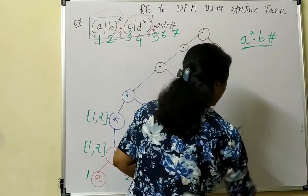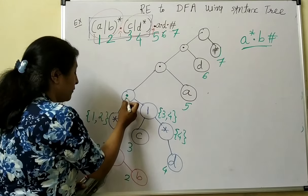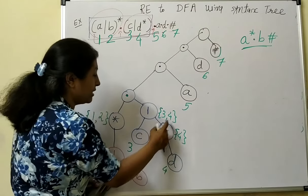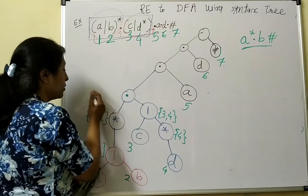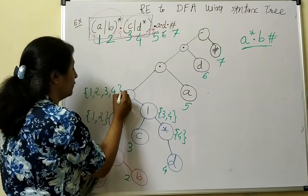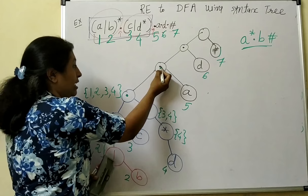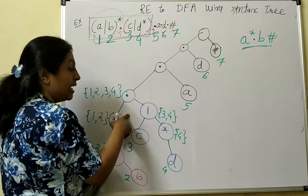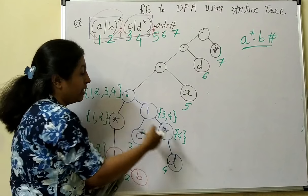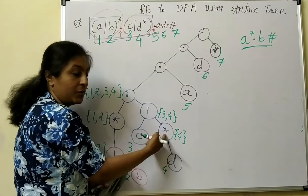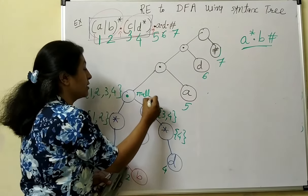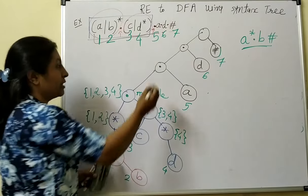Likewise, for this concatenation, the left-hand side node is nullable because it is Kleene's closure, which always gives a null string. Hence we include the right side also. So first position of this subtree is 1, 2, and since it is nullable, also 3 and 4. For the next concatenation, the left side is still nullable because symbol 1 and 2 come from Kleene's closure, and if we select D star from the union, D star can also give null string.